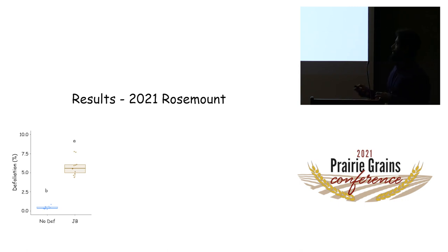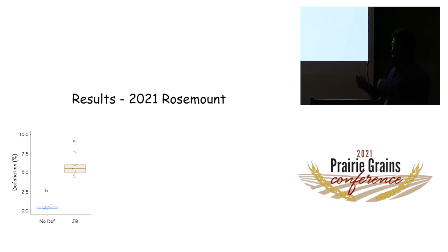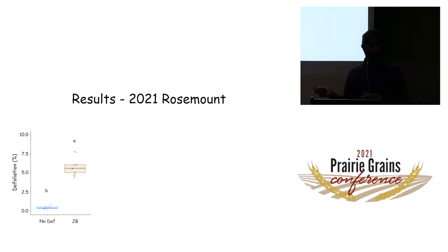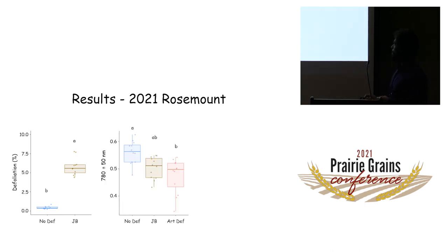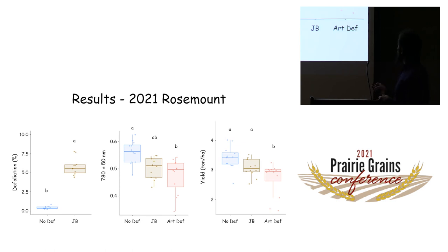When looking at the upper canopy, defoliation can be as high as 15–20%, but averaged across the whole plant it's around 5% — even after releasing thousands of Japanese beetles. For plant reflectance at Rosemount with three treatments — control, Japanese beetles, and artificial defoliation — there was a numerical reduction in reflectance, but statistically only artificial defoliation was significantly different from the control. Japanese beetle defoliation was not statistically significant. For yield, the same pattern held: Japanese beetle plants had yield similar to control, while artificial defoliation reduced plant yield.